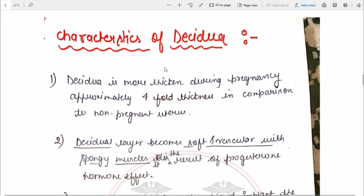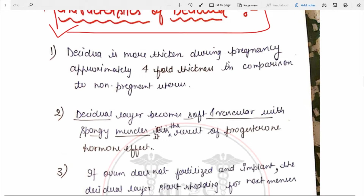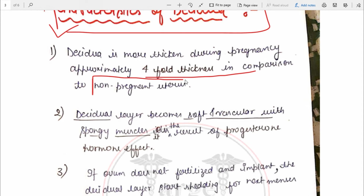Now we come to the characteristics of decidua. First, the decidua is more thickened during pregnancy — approximately four-fold thickness in comparison to the non-pregnant uterus. As we know, decidua is the endometrium of the pregnant uterus, so the pregnant uterus will be very thickened — four times the thickness of a normal uterus.